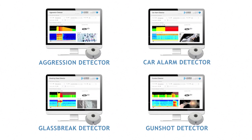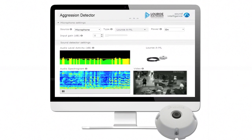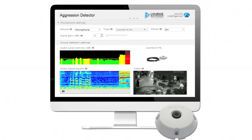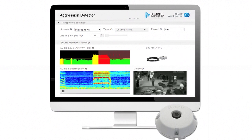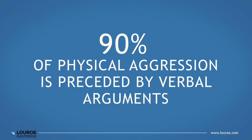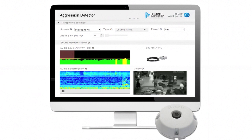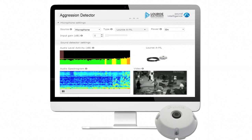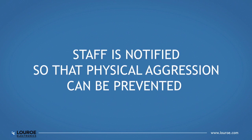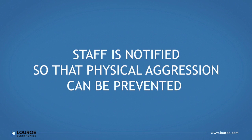LURO offers a suite of audio analytics. The aggression detector is a valuable deterrence tool because it is able to identify verbal aggression, and 90% of physical aggression is preceded by verbal arguments. Stressed voices such as shouting and yelling are objectively detected, and staff is immediately notified so that physical aggression can be prevented.